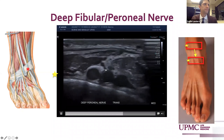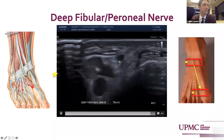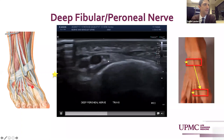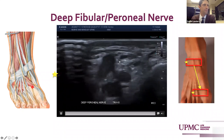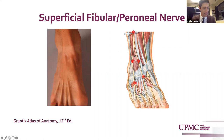As it moves into the foot, the nerve will course in between the first and second metatarsals into the first web space. The superficial peroneal nerve provides sensation to the medial and intermediate dorsal cutaneous nerves of the foot, and may split above or below the ankle joint. Here we see the cartoon illustration of the superficial peroneal nerve splitting into the medial dorsal cutaneous nerve of the foot and the lateral dorsal cutaneous nerve of the foot.